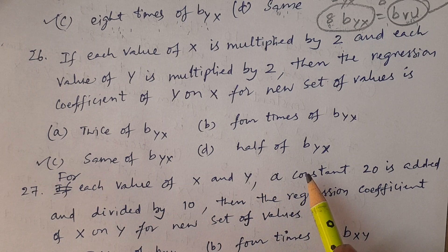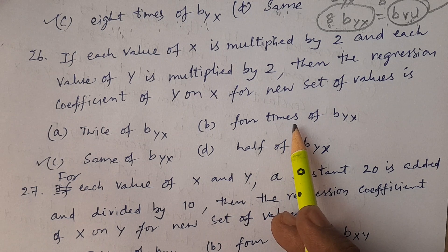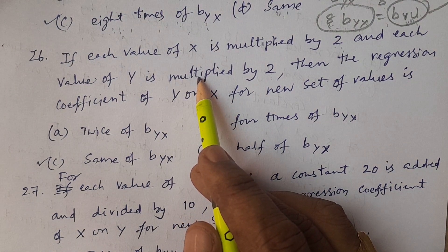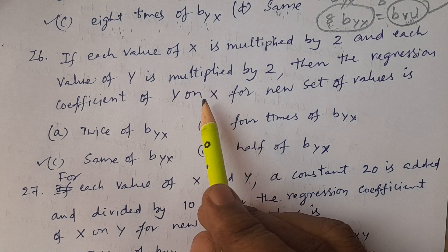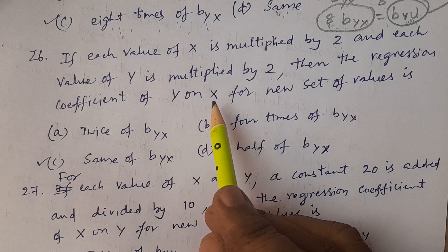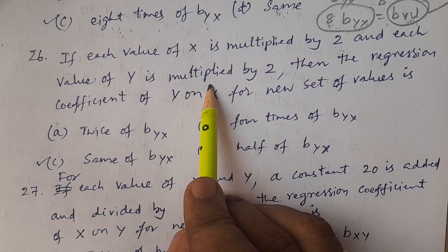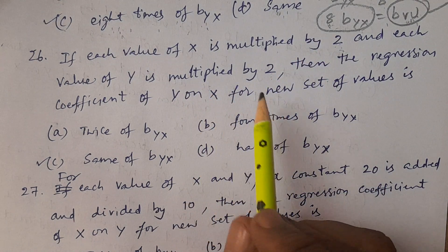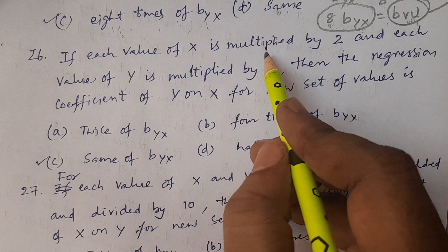Previously in one particular question, we did this kind of problem. Each value of x and each value of y are divided by a particular constant, then h and k are the same and h and k will be cancelled. Therefore, whether it is multiplied or divided, if both are multiplied or both are divided, then h and k will be the same.